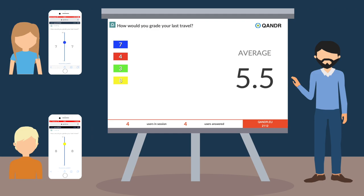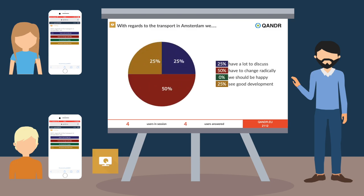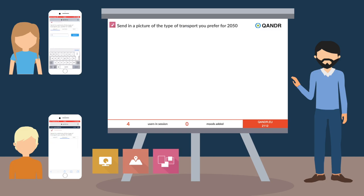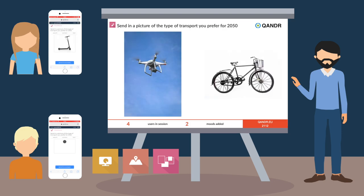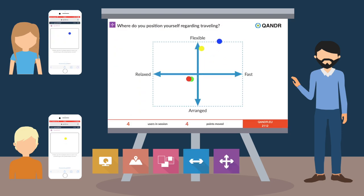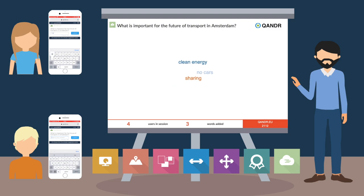Quandr needs nothing more than a web browser and offers different types of interactions. Of course you can do polls, but Quandr also offers more advanced interactions. You can ask your participants to point out elements on a central image. You can make mood boards together based on images from the internet or with images from the camera roll of the phones. You can challenge your audience with a dilemma or a quadrant, and you can grade certain concepts or ideas. And you can brainstorm together using a word cloud.